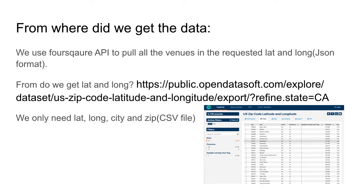For our data, we use the FourSquare API to pull all venues in a requested location. We have also downloaded location latitudes and longitudes from a website named OpenDataSoft, which provides California city longitude, latitude, zip code, and many other attributes such as time zones.